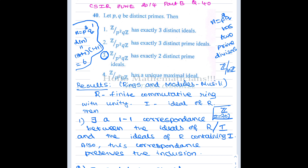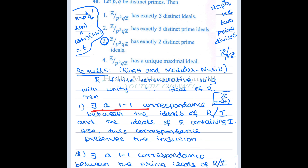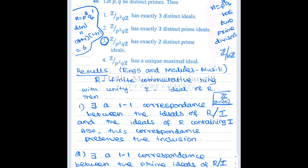Rings and Modules by Musili is a very nice textbook — the first half covers ring theory and the second half modules. The result states: for a finite commutative ring with unity R and an ideal I of R, there exists a one-to-one correspondence between the ideals of the quotient ring R mod I and the ideals of R that contain I.